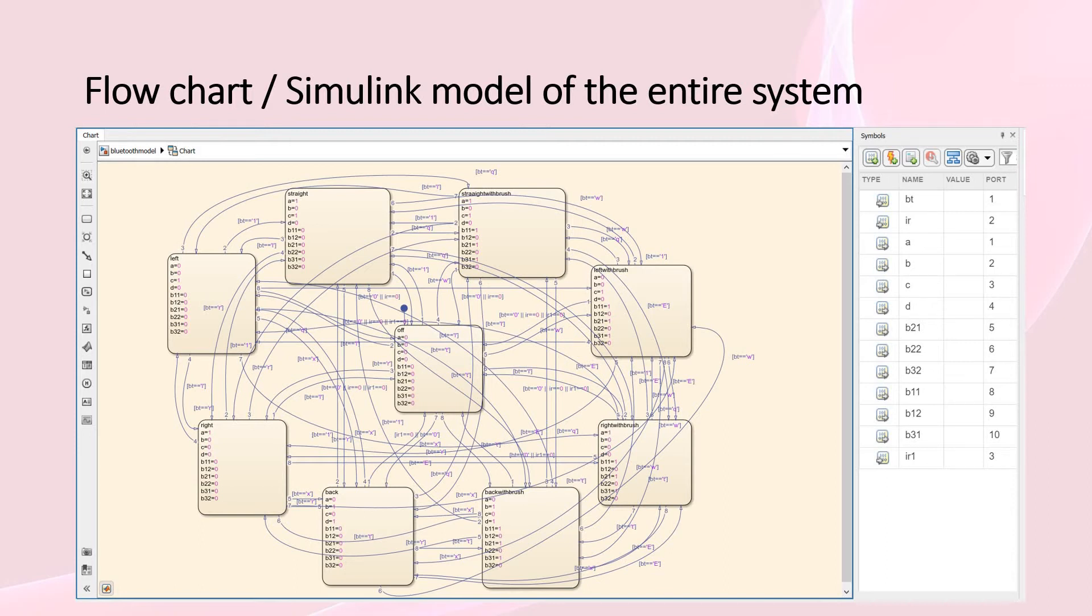The variables: Bt is for Bluetooth, IR is for IR sensor in the front, A and B for right wheel, C and D for left wheel, B21 and B22 for the brush in the front, B31 and B32 are the brush again in the front, and B11 and B12 is for the brush beneath.